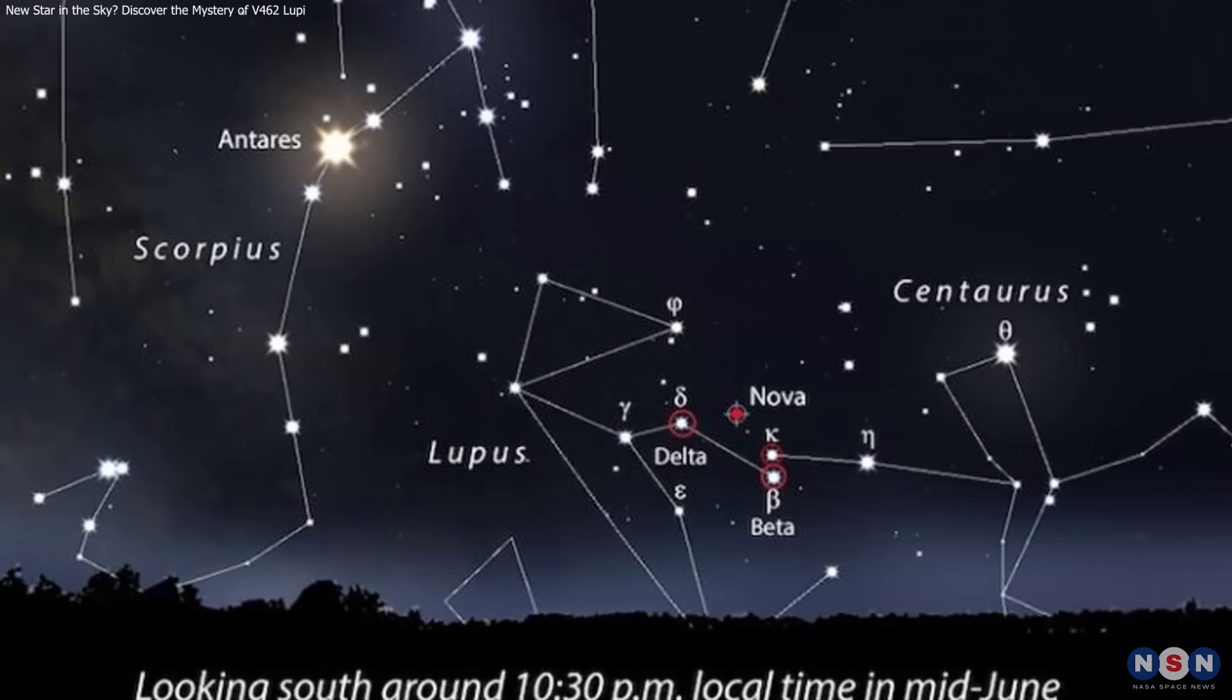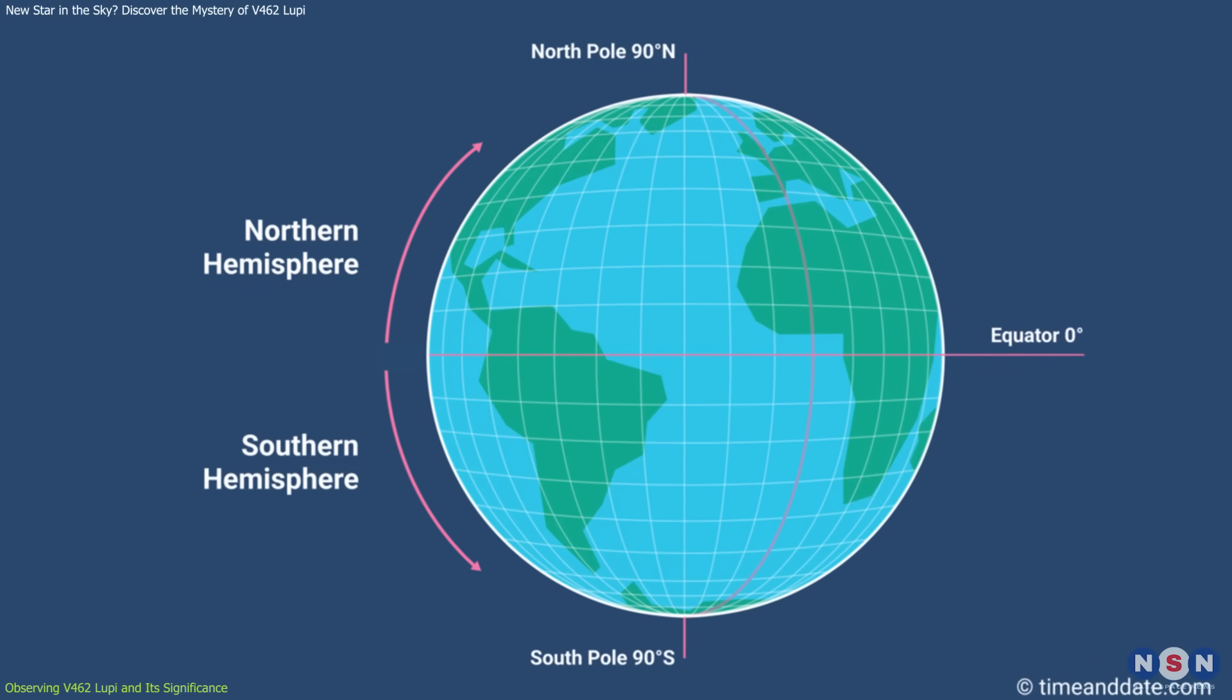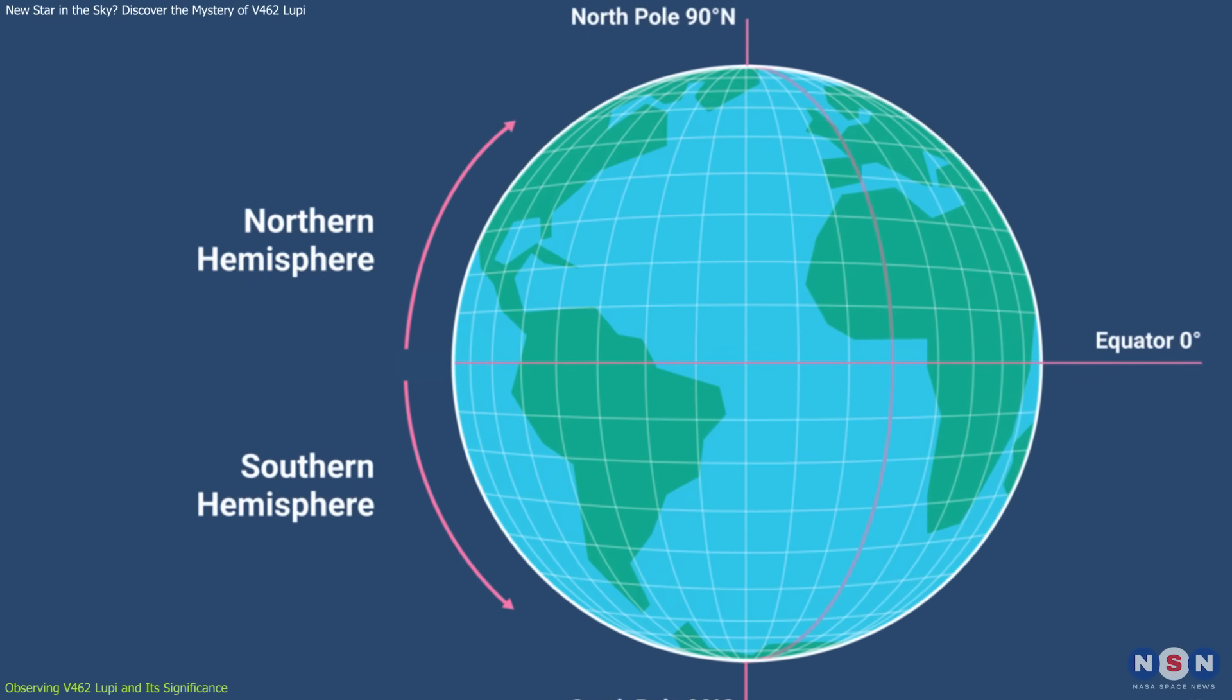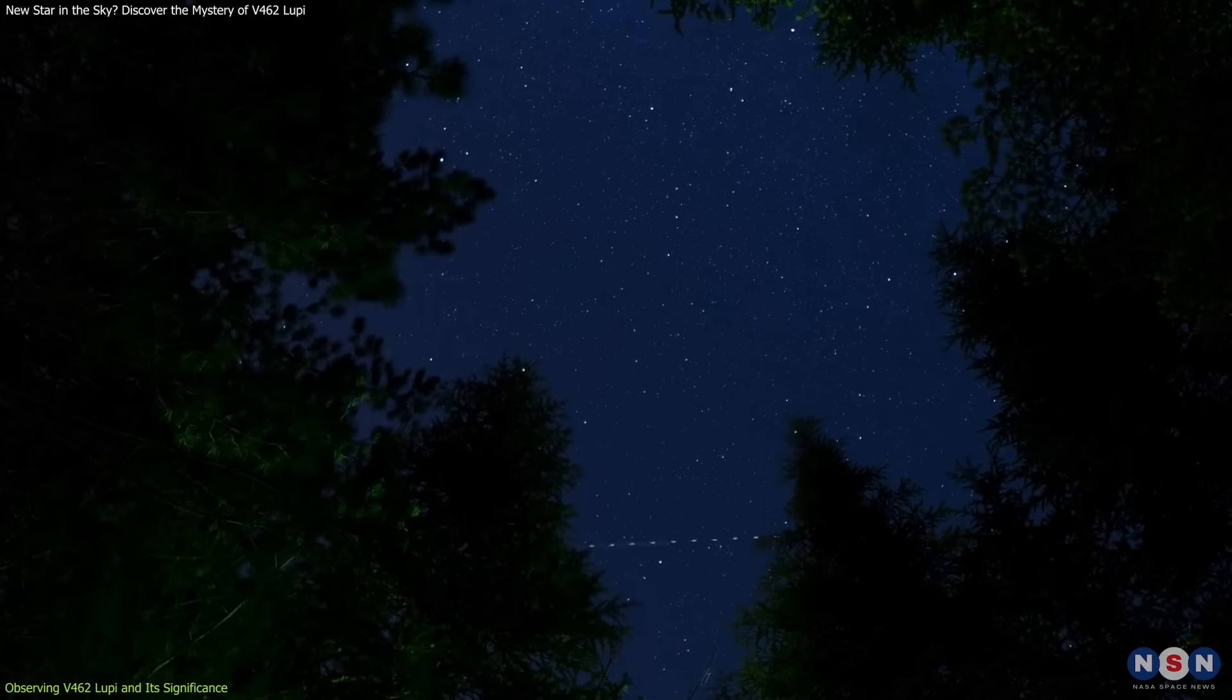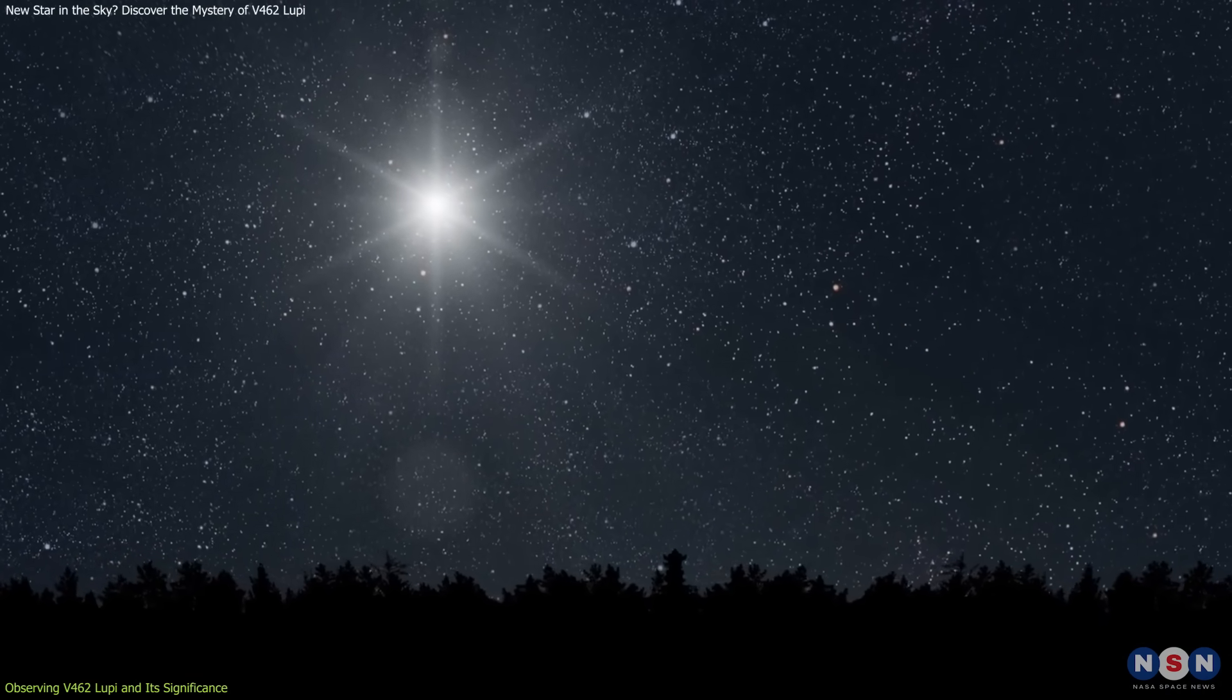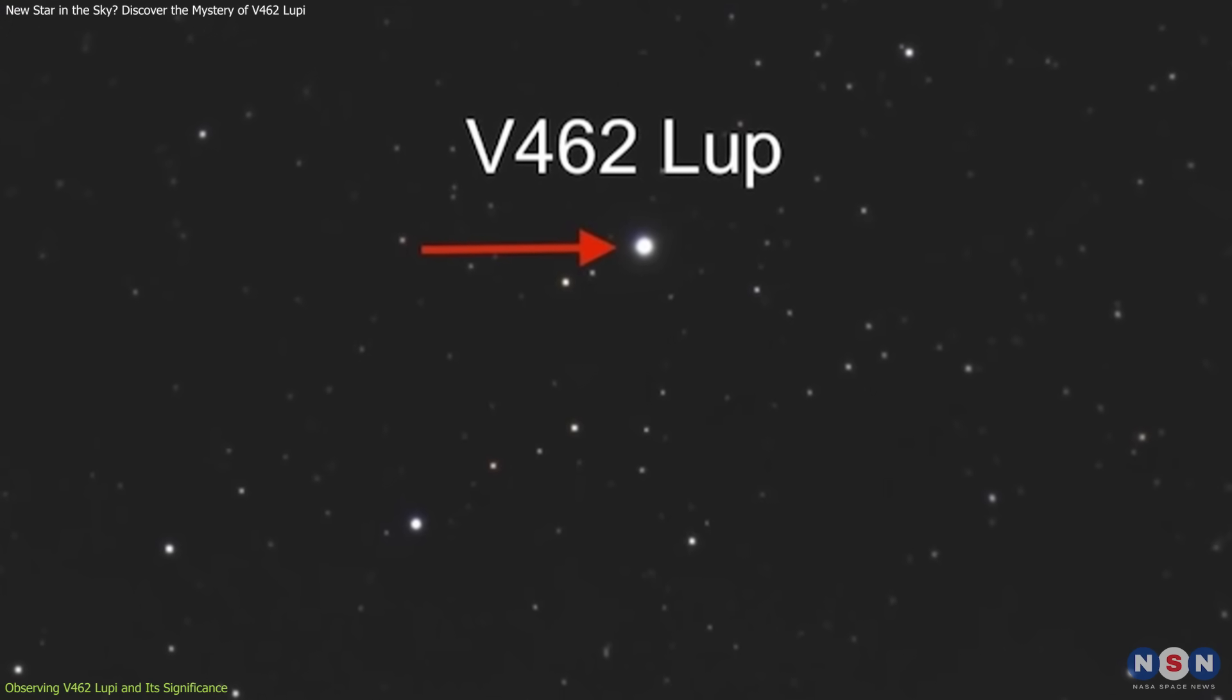The nova is located in the Lupus constellation, which is primarily visible from the southern hemisphere but can also be seen from parts of the northern hemisphere. For those in regions with clear, dark skies, the nova is now visible to the naked eye, making it an exciting observation for anyone interested in astronomy.